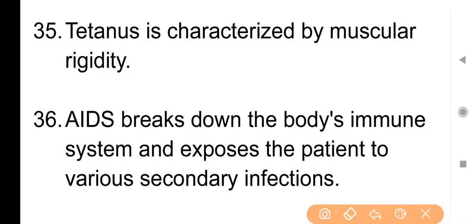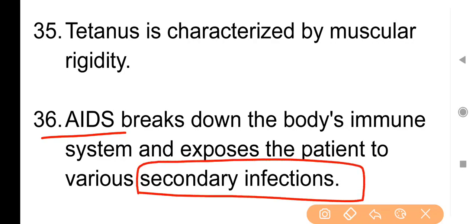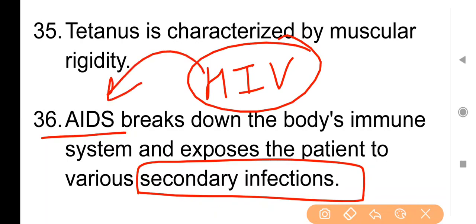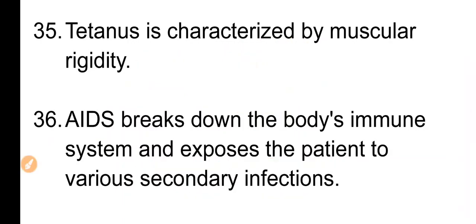Point No. 36: AIDS breaks down the body's immune system and exposes the patient to various secondary infections. जब किसी person को HIV (human immunodeficiency virus) का infection होता है — AIDS होता है — तो इस virus द्वारा हमारे body का immune system बेकार कर दिया जाता है, destroy कर दिया जाता है। इस कारण हमारी body छोटे से छोटे infection के लिए susceptible हो जाती है और इन्हीं infections के कारण person की death होती है। AIDS patient में आपकी priority में से एक होगा कि उसे infection से prevent करें।